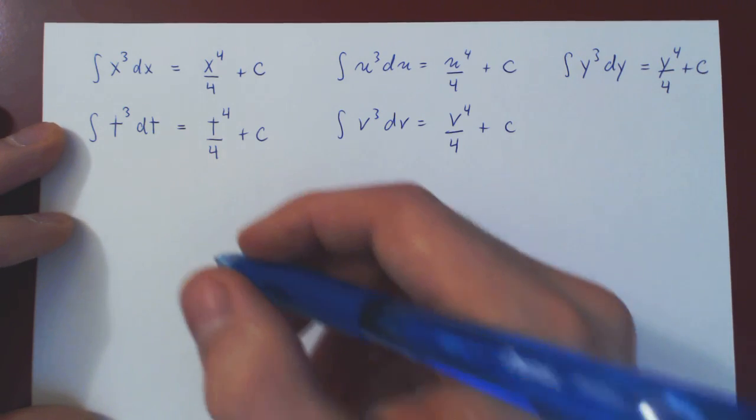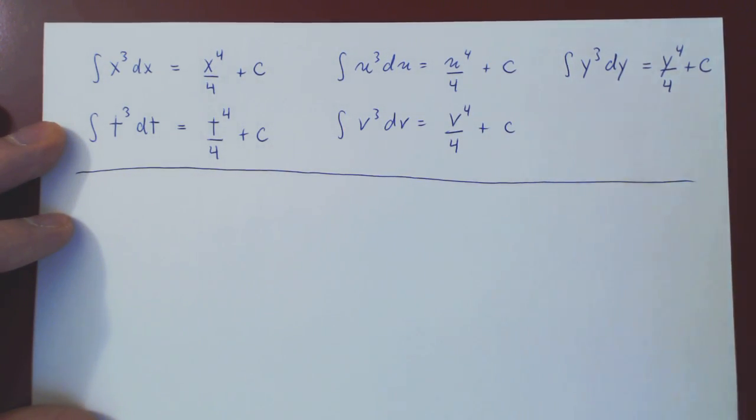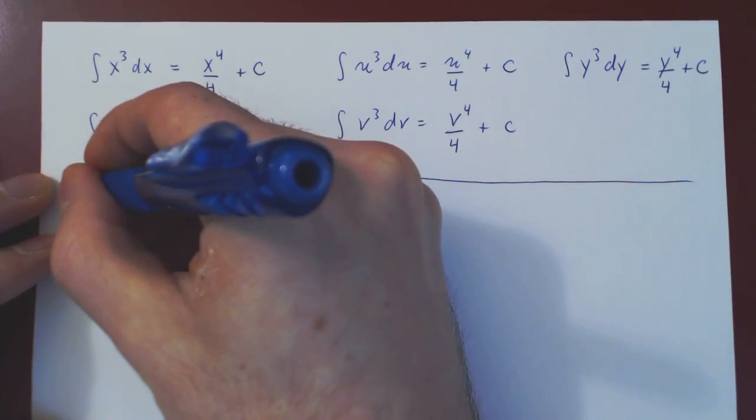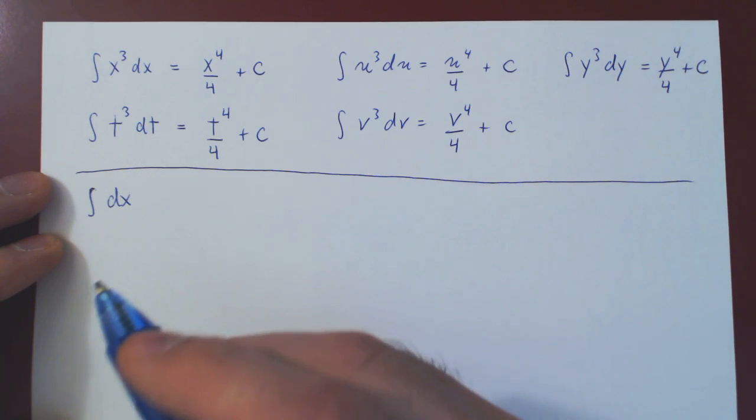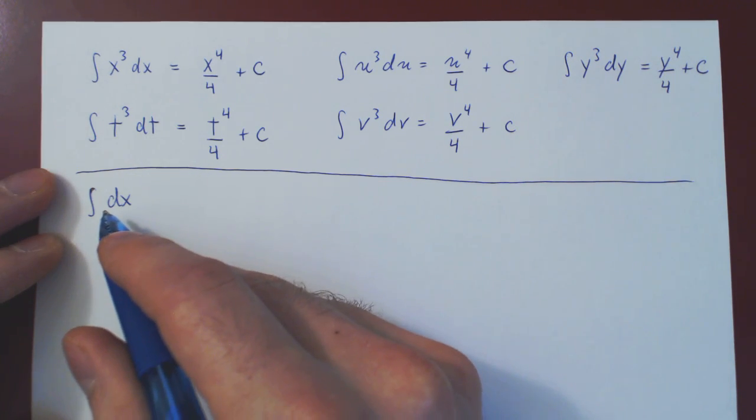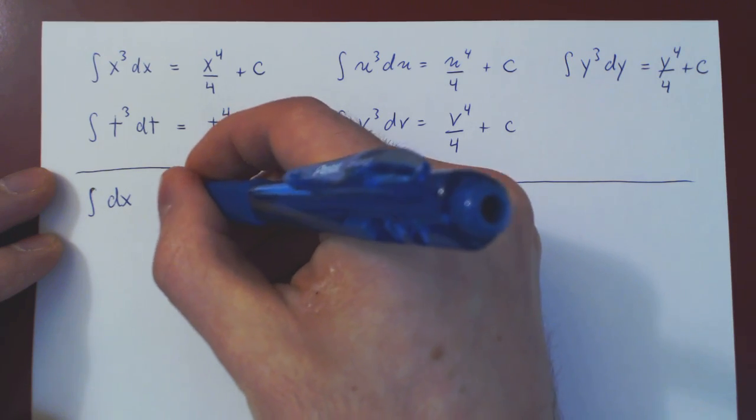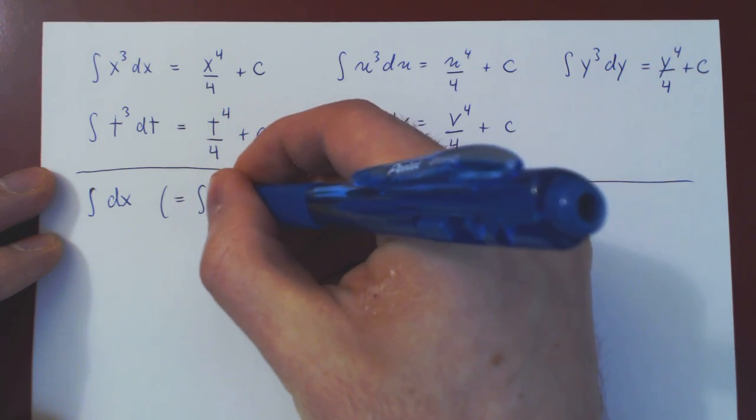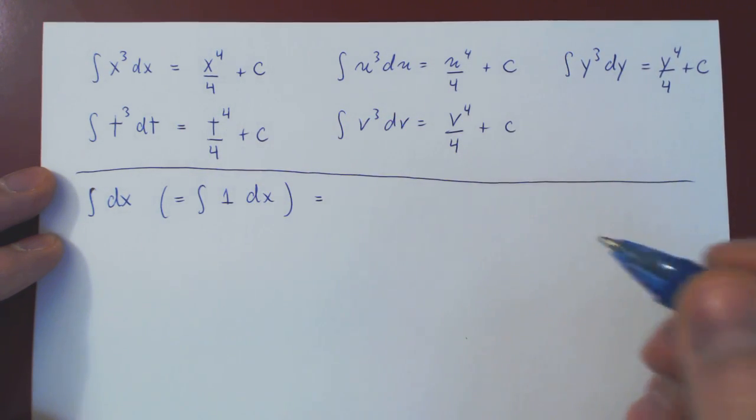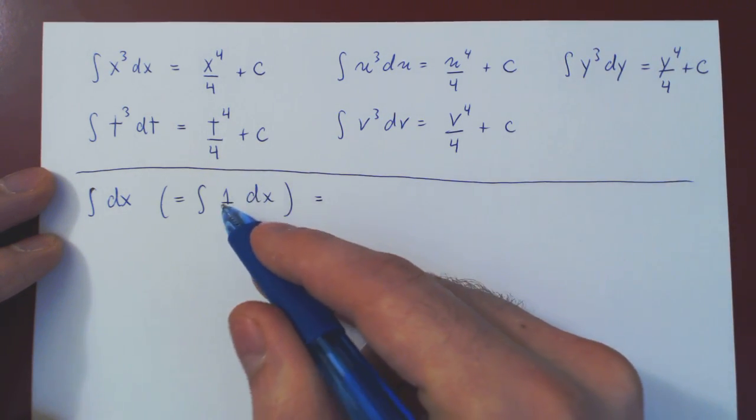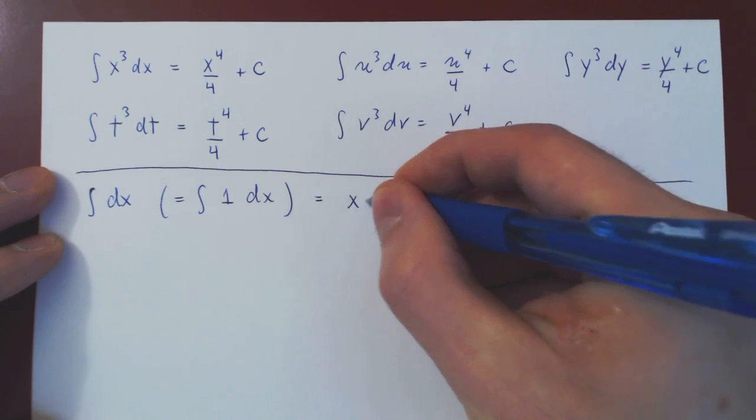One little remark now that may look trivial, but this will be important when we consider integration by parts. If I integrate simply dx, remember that when you have simply dx, it really is the integral of 1 times dx. And now you're looking for a function of x whose derivative is 1. This is, of course, simply x.